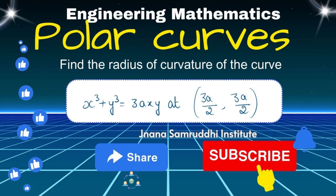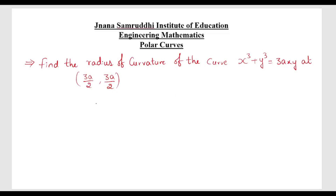Hello all. In this video we will learn engineering mathematics polar curves. Find the radius of curvature of the curve x³ + y³ = 3axy at x = 3a/2, y = 3a/2. Solution.